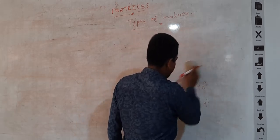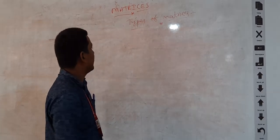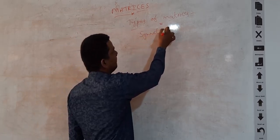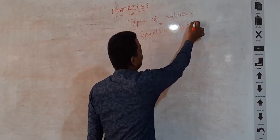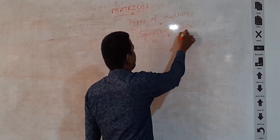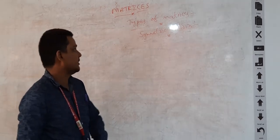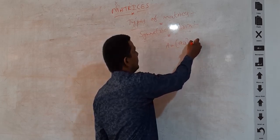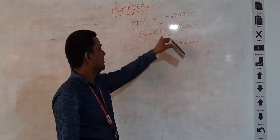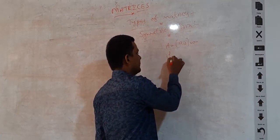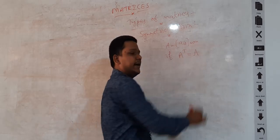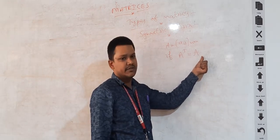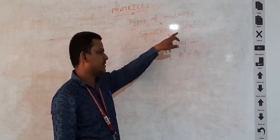Based on the definition of transpose, we have another type called the symmetric matrix. Let A be a matrix A-i-j of order m by n. We call matrix A a symmetric matrix when the condition A-transpose equals A is satisfied. Whenever the given matrix satisfies the condition A-transpose equals A, then the matrix is said to be a symmetric matrix.